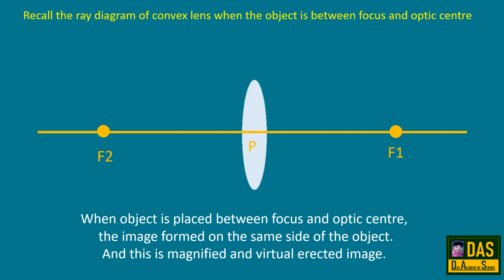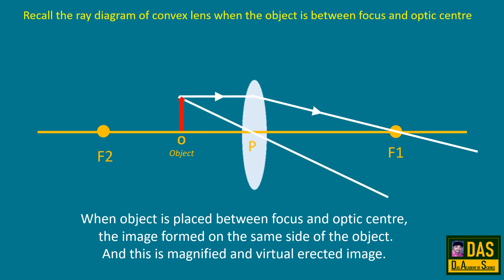Recall the ray diagram of a convex lens when the object is between focus and optic centre. The ray parallel to the principal axis, after refraction, passes through the principal focus F1, and the ray passing through the optic centre does not deviate. Since these two refracted rays are diverging, they cannot intersect. Extending them back, they converge at a point where the image forms. That is, when the object is between focus and optic centre, the image forms on the same side as the object — magnified, virtual, and erect.